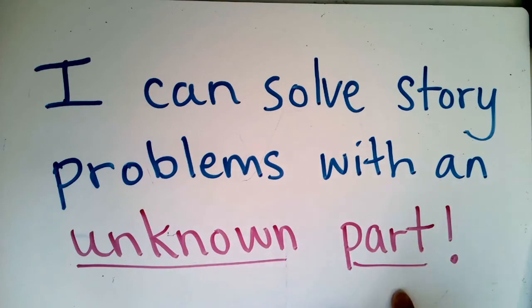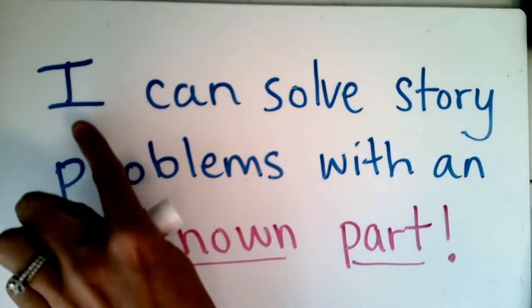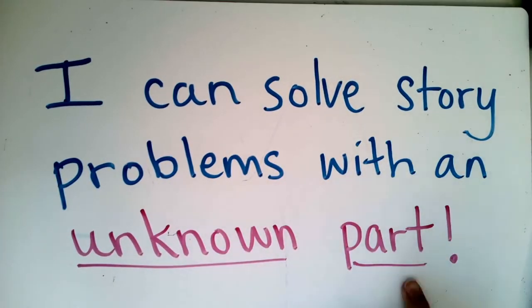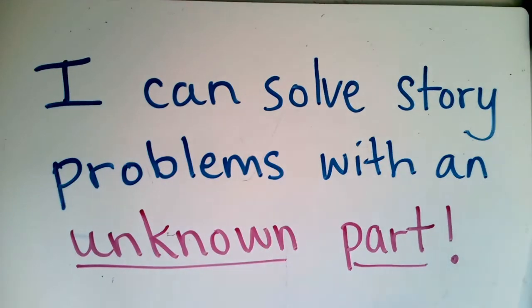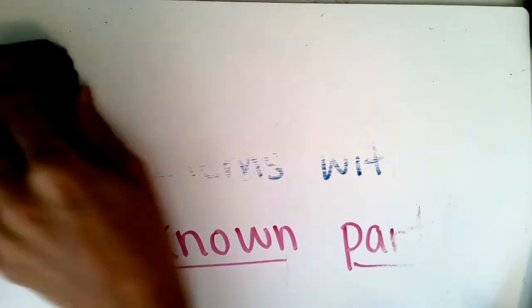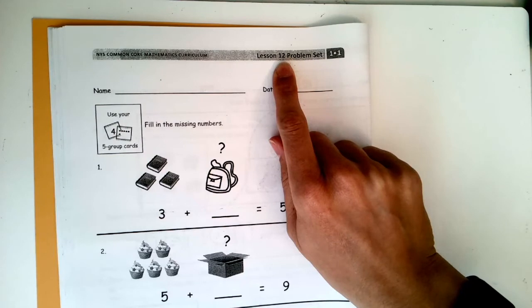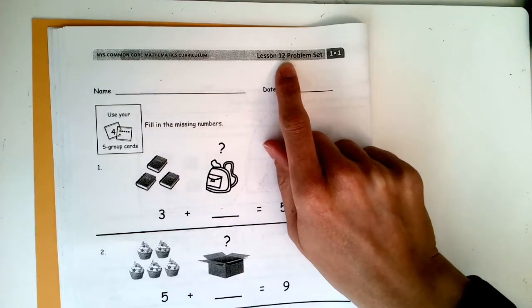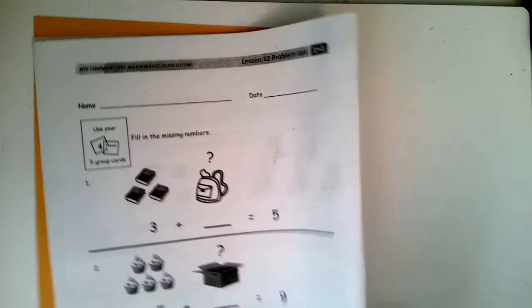So we have some story problems and our I can statement today says I can solve story problems with an unknown part. This is a super important part that we know. An unknown part is also the same thing as a missing part. We want to make sure that we understand when a story is asking us to find a part instead of finding a whole number. Let me make sure you have everything you need to be successful today. You need your whiteboard with a marker and an eraser, and then your lesson 12 problem set.